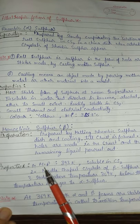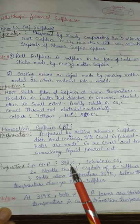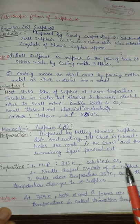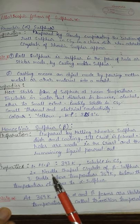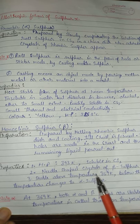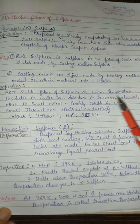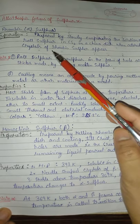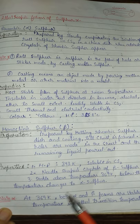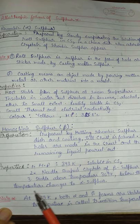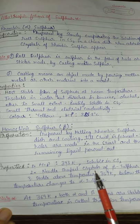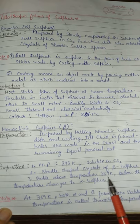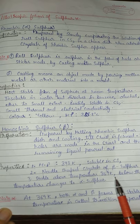Properties of monoclinic sulfur: its melting point is 393 Kelvin. It is also soluble in carbon disulfide. It is made of needle-shaped crystals, unlike rhombic sulfur which has octahedral crystals. Monoclinic sulfur is stable above 369 Kelvin.